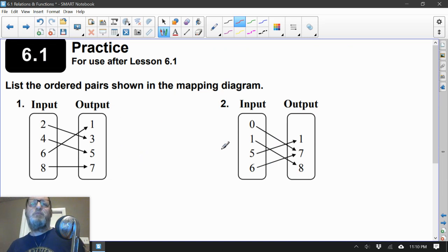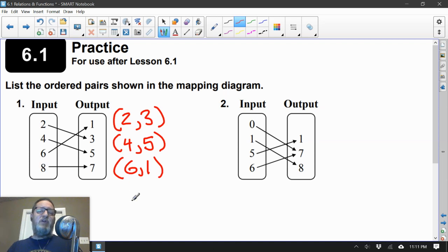Here we go. So first thing we have to do here, I'm going to look at the odd-numbered problems. List the ordered pairs shown in the mapping diagram. All we have to do is take our inputs and figure out which output it goes with. So the first input is 2, and 2 goes with 3. One ordered pair. What's next? 4, and 4 goes with 5. There's our second one. 6 pairs up with 1, and 8 pairs up with 7. So there's the ordered pairs that we pulled out of this mapping diagram.